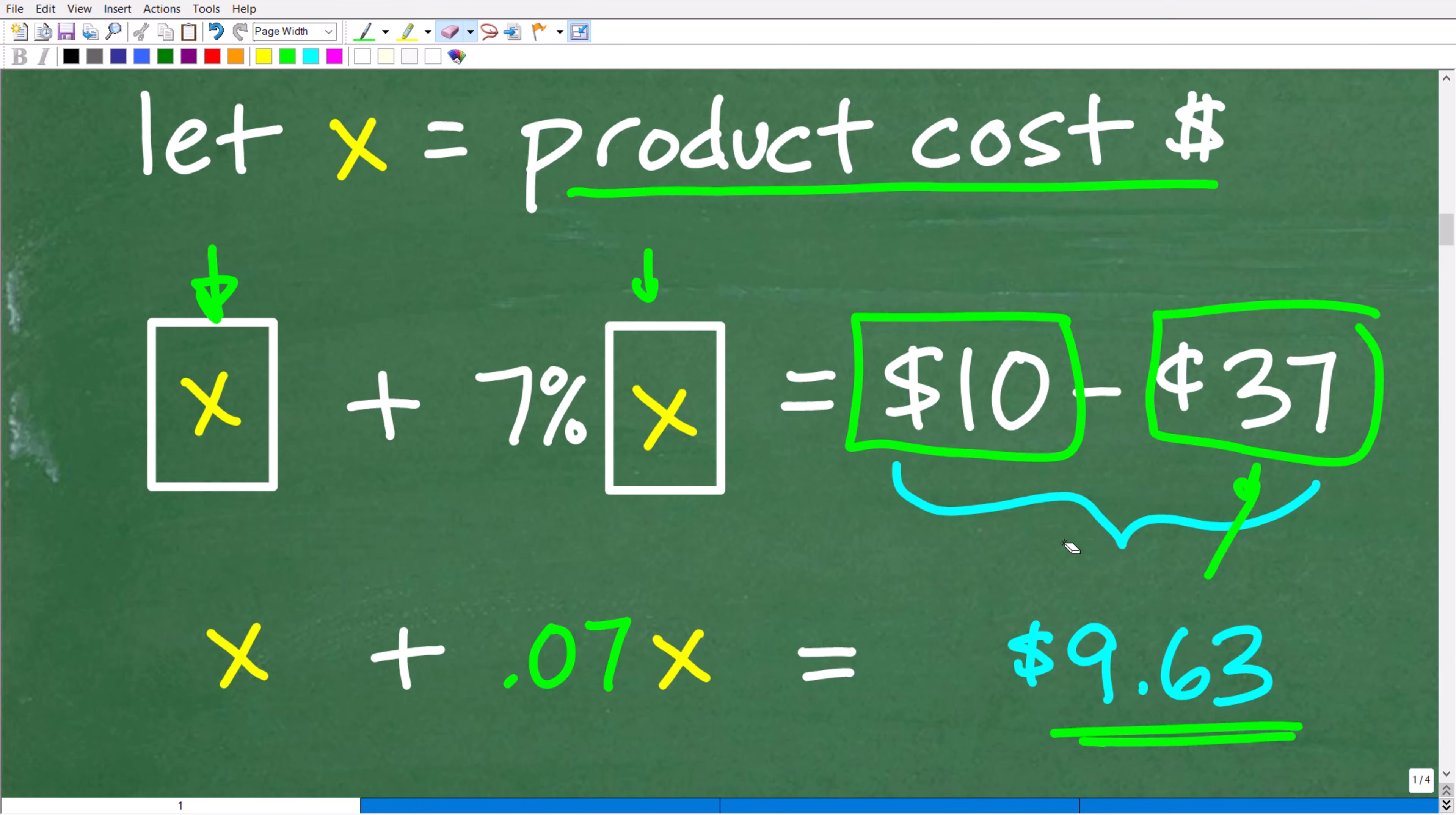All right. Now, once we kind of cleared up any confusion here, hopefully now we understand what kind of occurred, what we need to do is build an equation because we have this variable X.